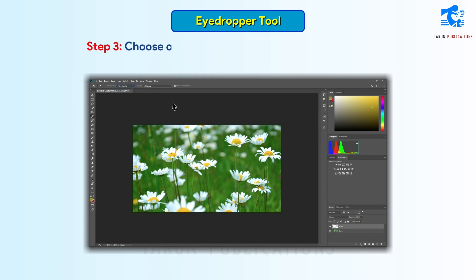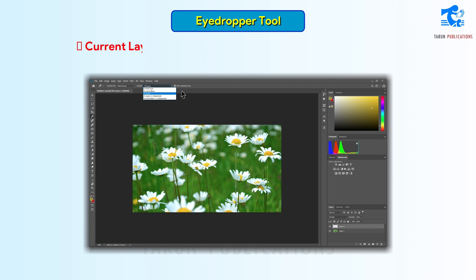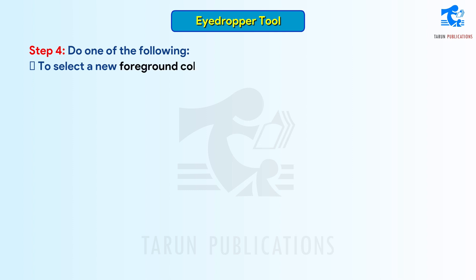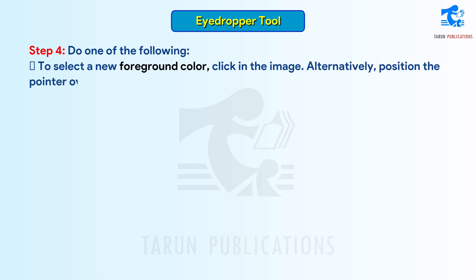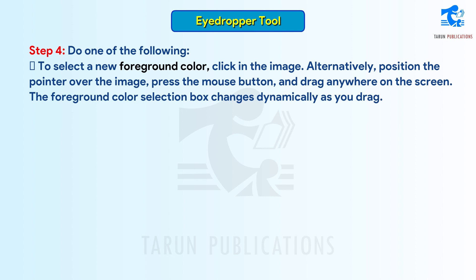Step 3: Choose one of the following from the sample menu. All Layers samples color from all layers in the document. Current Layer samples color from the currently active layer. Step 4: Do one of the following. To select a new foreground color, click in the image. Alternatively, position the pointer over the image, press the mouse button and drag anywhere on the screen. The foreground color selection box changes dynamically as you drag. Release the mouse button to pick the new color.